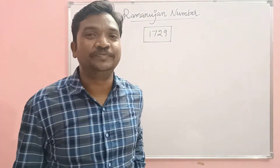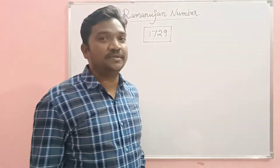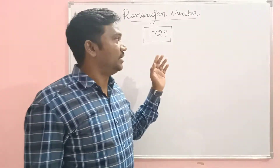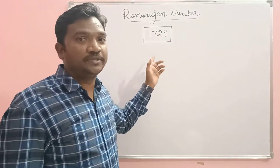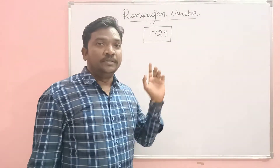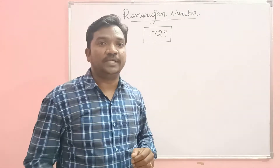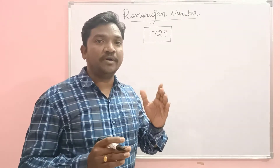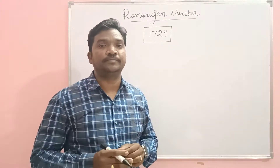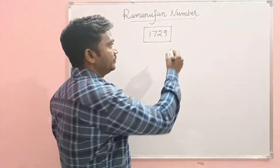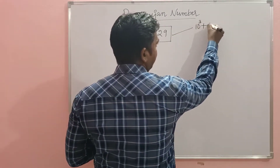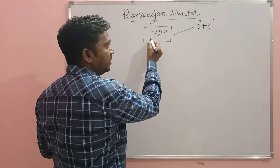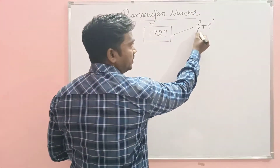Hi everyone, hope you are all doing good. What is Ramanujan's number? That is 1729. What is the specialty of this number? This is the least positive integer that can be expressed as the sum of two different cubes in two different ways. 1729 can be expressed as 10 cube plus 9 cube, and 12 cube plus 1 cube.